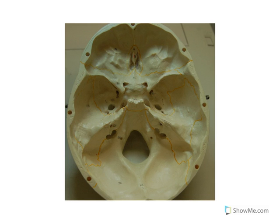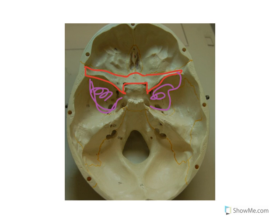That's not everything on the sphenoid we can see. There are two major wing regions: this area here is called the lesser wings — shown in red — and then in purple are the greater wings down here.